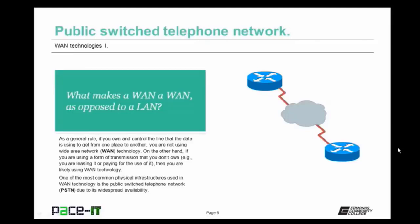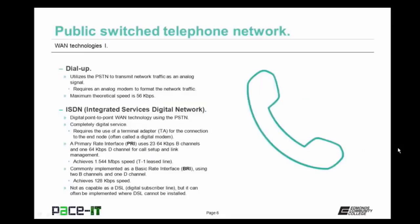An older technology but still somewhat valid today is dial-up. Dial-up utilizes the PSTN to transmit network traffic as an analog signal and does require an analog modem to format the network traffic correctly so it can be transmitted. Your maximum theoretical speed on dial-up is 56 kilobits per second — it's not very fast. Then there's ISDN, Integrated Service Digital Network. ISDN is a digital point-to-point WAN technology that utilizes the PSTN — it's a completely digital service. It requires the use of a terminal adapter, or TA, to make the connection to the end nodes — this TA is often called a digital modem, but it's not. ISDN can use a primary rate interface, or PRI. The PRI is composed of 23 64 kilobits per second B-channels and one 64 kilobits per second D-channel. That D-channel is used for call setup and link management. A PRI can achieve 1.544 megabits per second speed, commonly referred to as a T1 leased line.